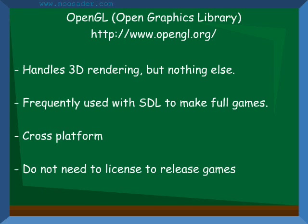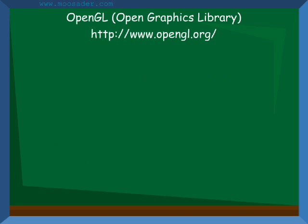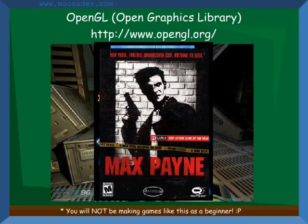OpenGL is a graphics library to handle 3D rendering for your games. It only handles graphics, so you will need a supplemental library for audio and extra functionality. OpenGL is frequently used with SDL, where SDL handles everything but the graphics rendering, but there are also libraries like OpenAL and GLUT. OpenGL is cross-platform and you do not need to pay to release commercial games with it. Some games made with it are Doom 3, City of Heroes, and Max Payne.